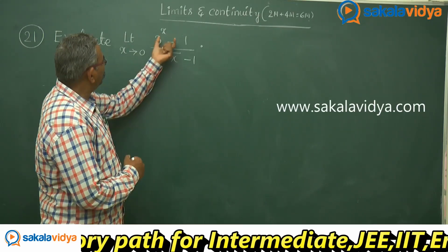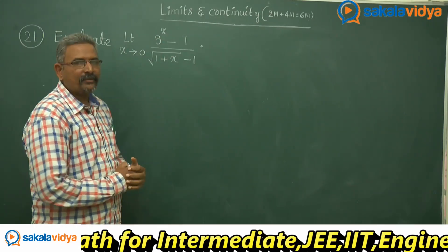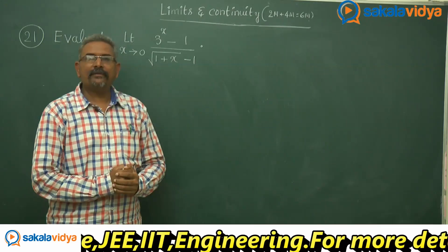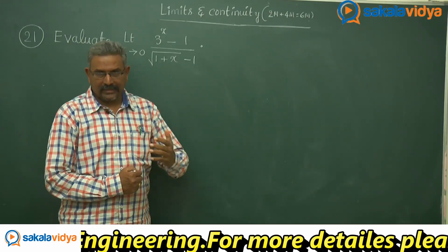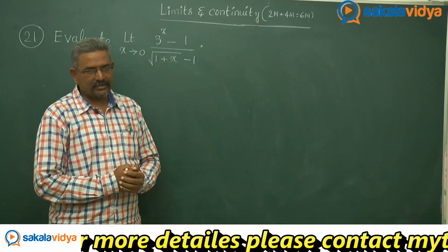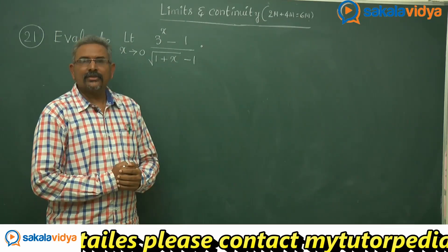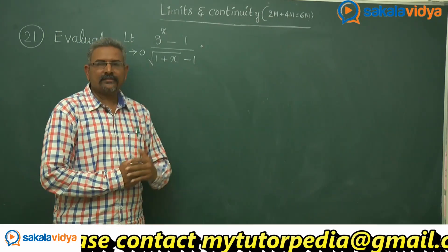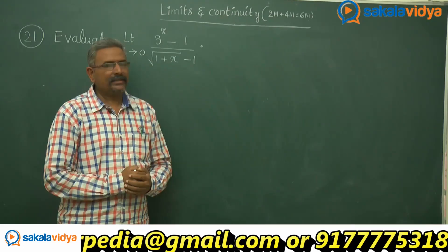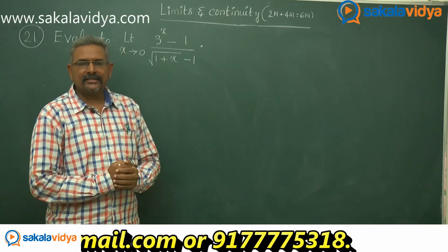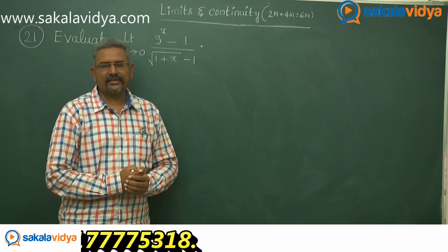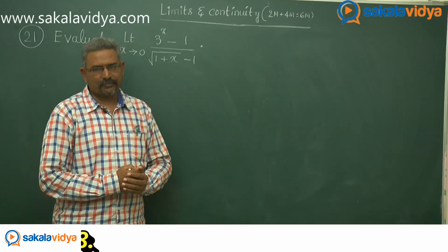We can divide both numerator and denominator by x. The numerator becomes 3 power x minus 1 by x, and the denominator becomes root of 1 plus x minus 1 by x. Alternatively, we can rationalize the denominator with its rationalizing factor, and then solve the problem.